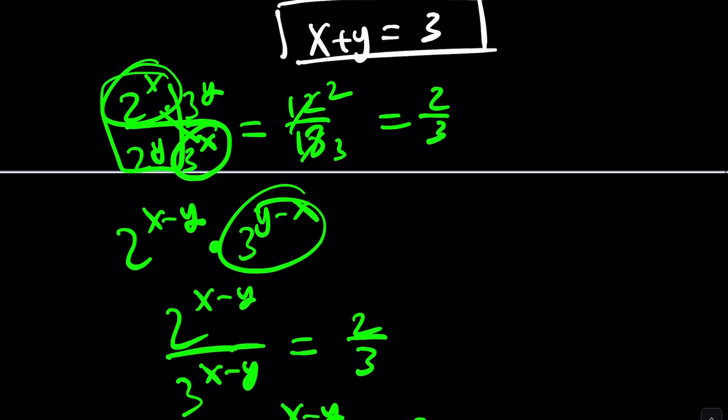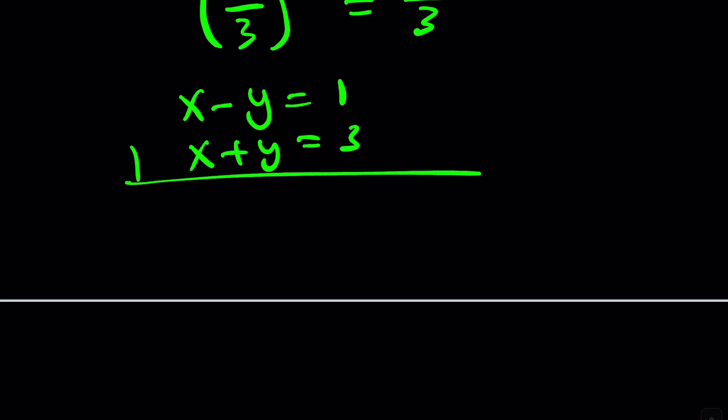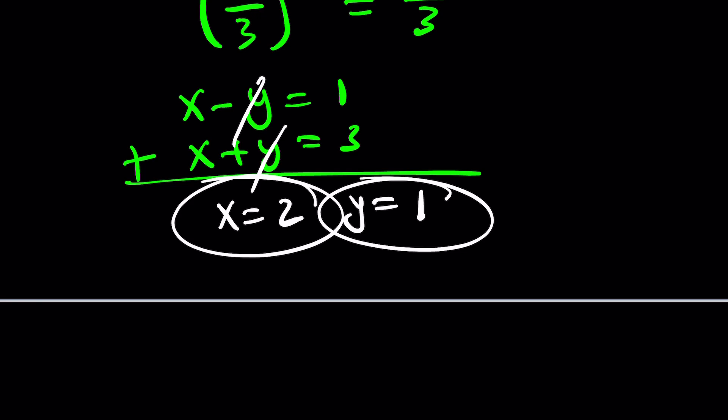And if you solve this as a system, we can get x and y from here. And that's what we were trying to solve for. So let's go ahead and do this. 2x is 4. x is equal to 2. And y is equal to 1. And that seems to be the only solution to the system.